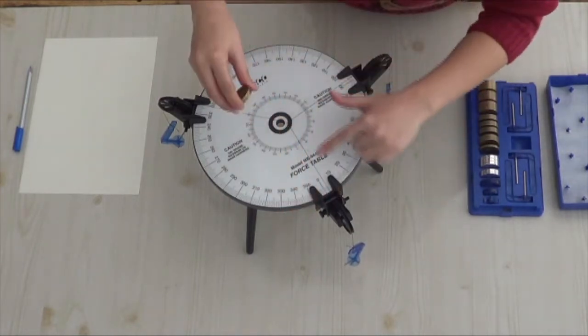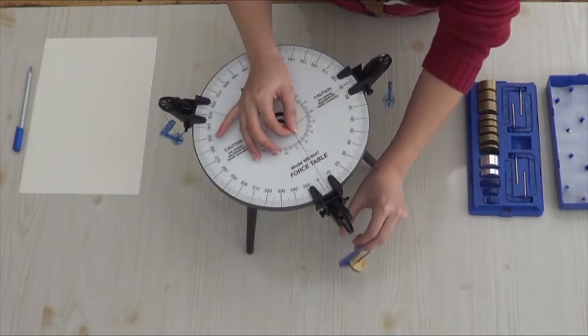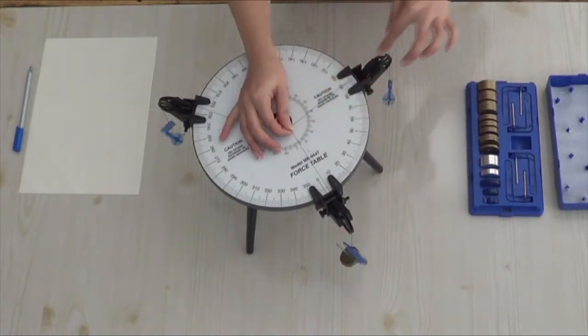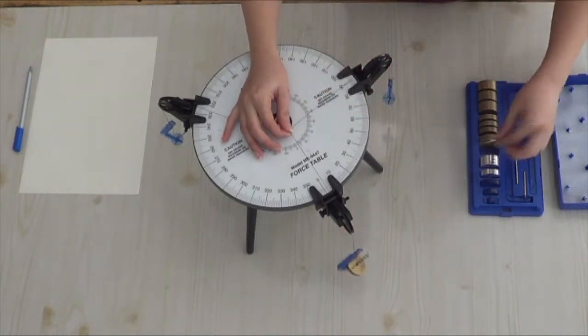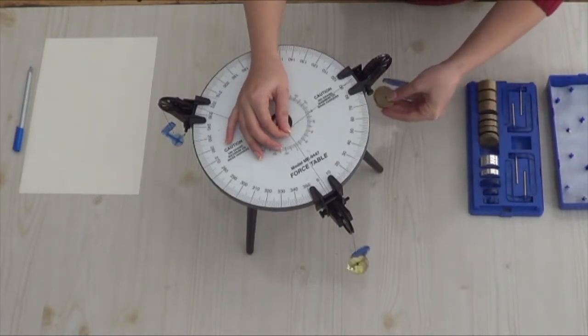Position of two pulleys must be fixed on 0 degrees and 90 degrees during the whole experiment. You are not supposed to change this position. You may start adding masses onto the hangers located at these fixed points.